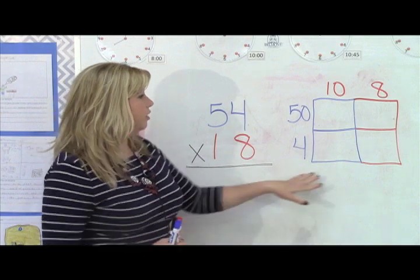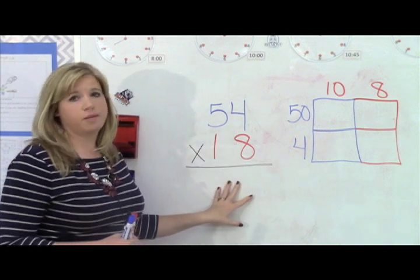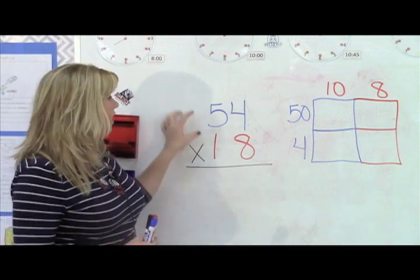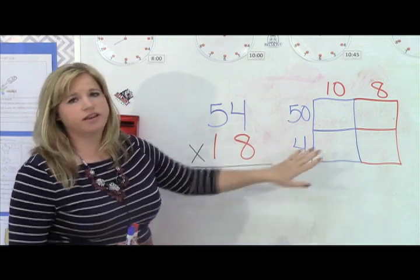So the first thing I'm going to do is create this box, and I have four boxes because I have four numbers over on this side. So if I had one more number up here, I would have done three boxes going down and two across.